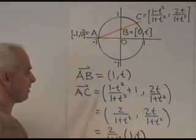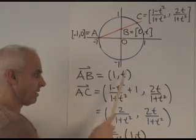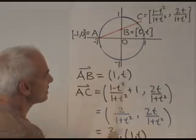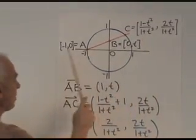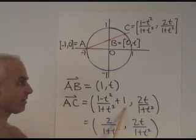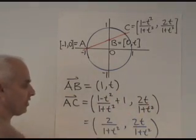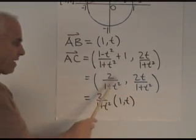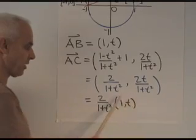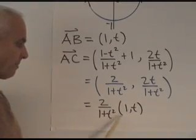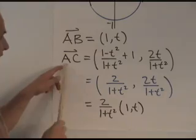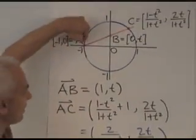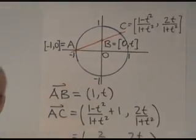The vector from A to B, that vector, is one over and up t. So it's the vector (1,t) in round brackets because it's a vector. The vector from A to C, we take the difference between coordinates. So this minus this is this plus one, and this minus zero is just 2t over (1 plus t squared). Simplify this. Get that. Then pull out the common factor 2 over (1 plus t squared). You get a multiple of (1,t). So the vector AC is a multiple of the vector AB. And that proves that these three points really are in a straight line just like that.